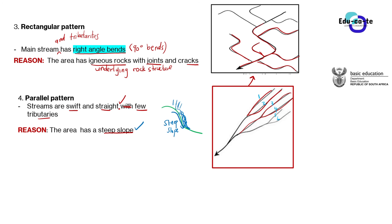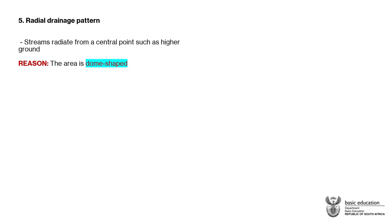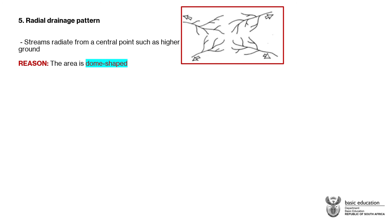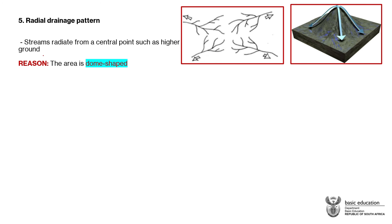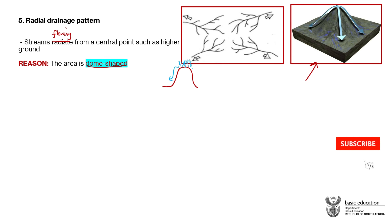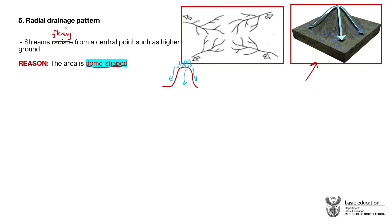The radial drainage pattern has streams that are radiating from a central point such as a higher ground — streams flowing from a central origin. Basically there is a dome-shaped mountainous area. When it rains on top of the mountain or dome, the water runs off in different directions towards the lower-lying areas, forming a radial drainage pattern.